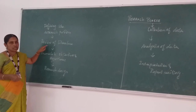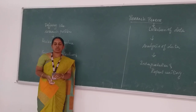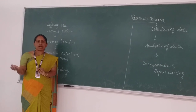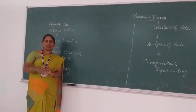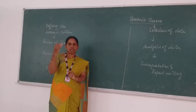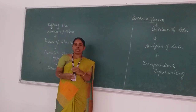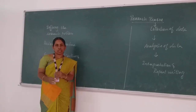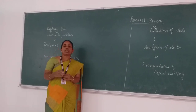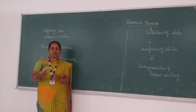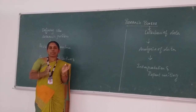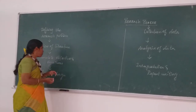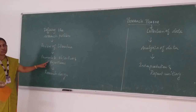In the review of literature stage, the researcher collects reviews from published sources — that is, journals, magazines, books, and websites. After collecting the reviews, the researcher thoroughly goes through all these reviews and notes down the objectives and findings of each. From these, the researcher identifies the research gap — that is, what the previous researcher did versus what we do in our research work. Based on this research gap, we formulate the objectives and hypothesis.